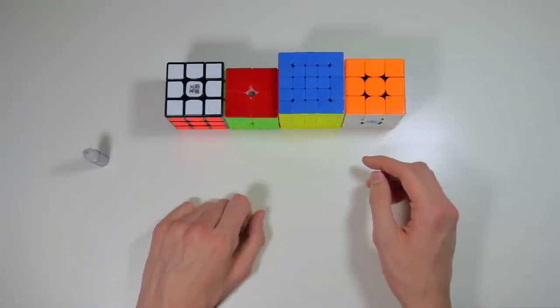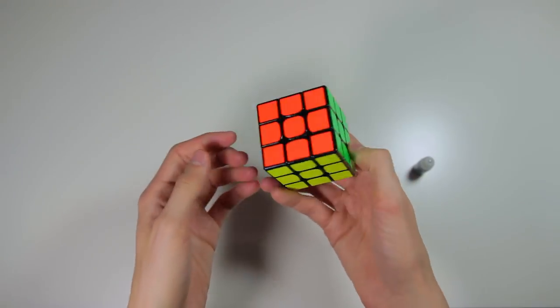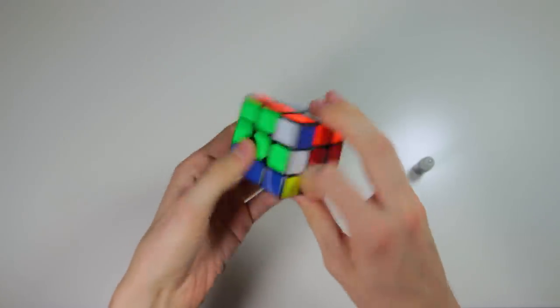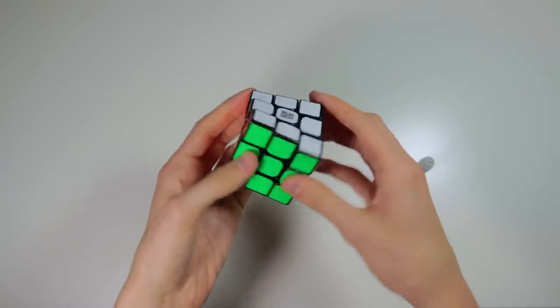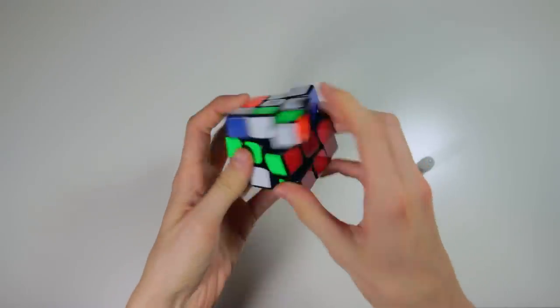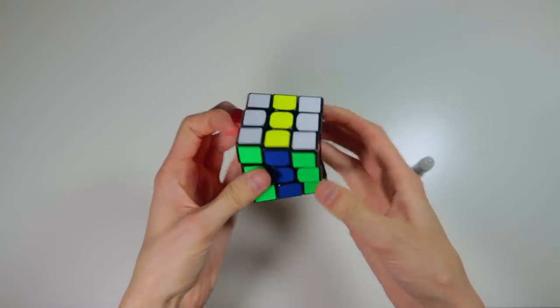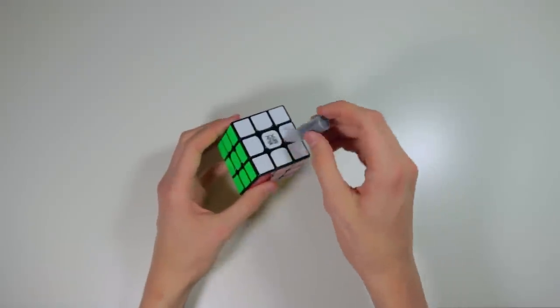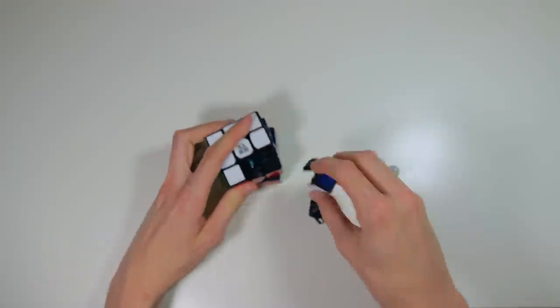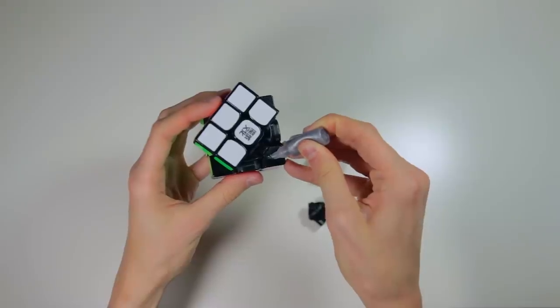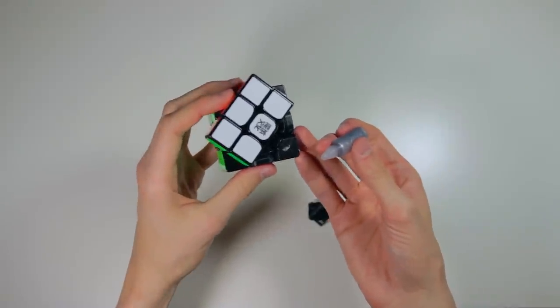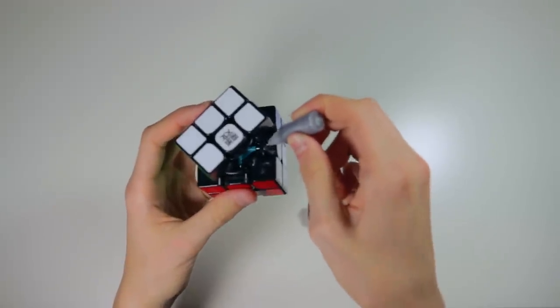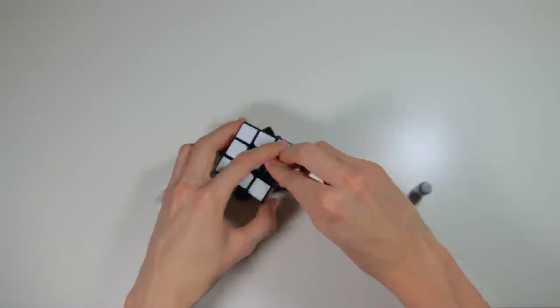So let's start out with the Weilong GTS version 2. So this is what the cube sounds like before adding in the lube. So you can add this lube in directly from these holes in the top, but I'm going to take out a couple of pieces just so that I can control exactly where the lube is going. Interesting. I don't know if you can see that, but it's actually kind of glittery. This way you can also get a good idea of how much lube I'm putting in.